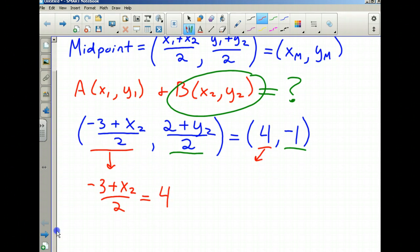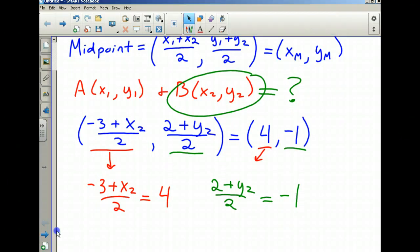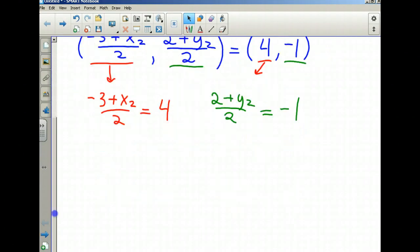We have that (-3 + x₂)/2 equals 4 from the midpoint, and for the y-coordinates, (2 + y₂)/2 must equal -1 according to the formula. We have two separate problems that we're just going to solve and simplify.